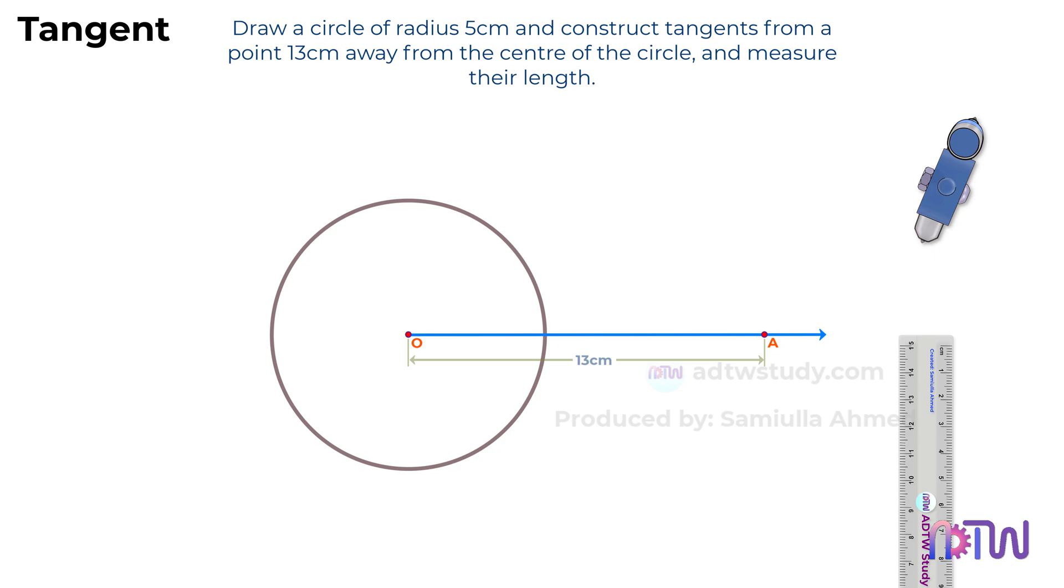To draw the tangents from point A to the circle, we need to divide this length between the center point of the circle and point A into two halves.